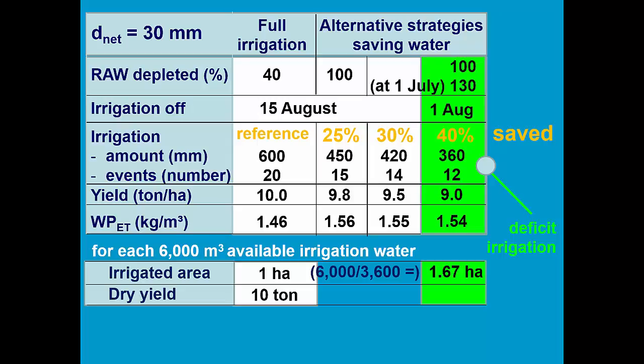For deficit irrigation, we can irrigate 1.67 hectares, and on each of those hectares we have 9 tons, so in total we get 15 tons. So with the same amount of water, we can increase the yield with 50%.